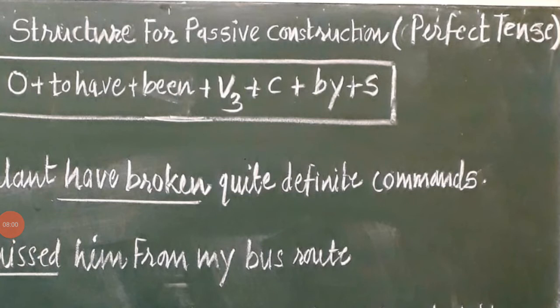Dear students, here is the structure for passive construction of past perfect, present perfect, or future perfect. Object is placed in place of subject. Once done, choose the 'to have' form — have, has, had, shall have, or will have. Then 'be' must appear in its past participle form 'been.' Your action verb, already in perfect tense past participle form, is kept as usual. Afterwards, any remaining complements, and finally your subject along with preposition 'by.' Note this structure carefully. Let us see a few examples.